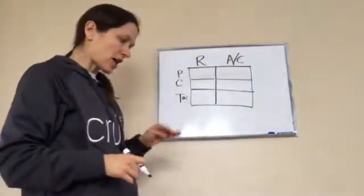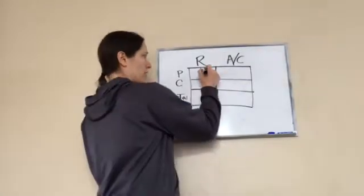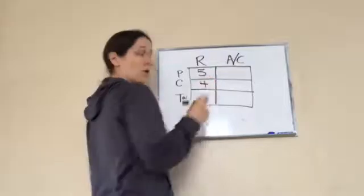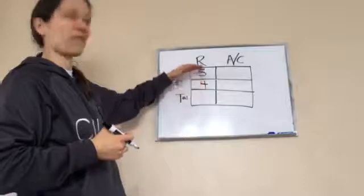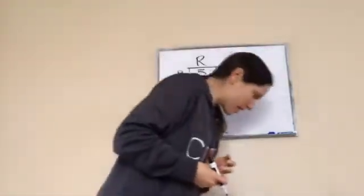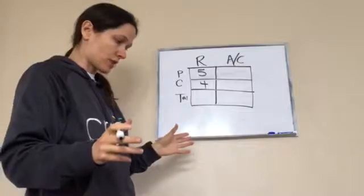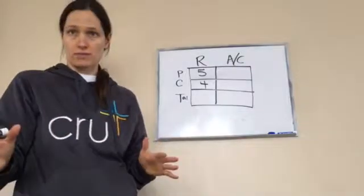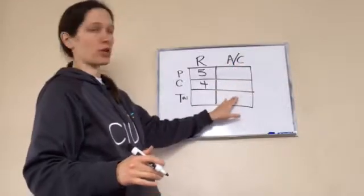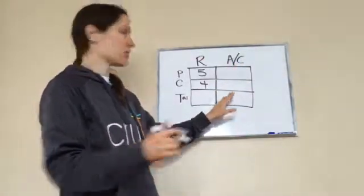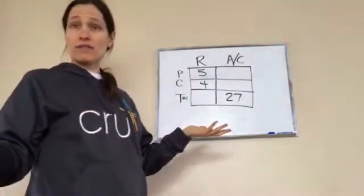Listen to this: the ratio of parents to children at the picnic was five to four. Five to four, parents to children. Now if it said children to parents, then I'd put four to five. And if there were 27 picnickers, where would 27 go — with the parents, children, or total? Total. 27 picnickers goes in the total actual count.